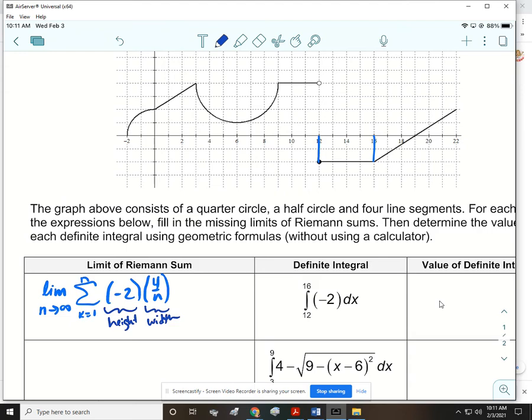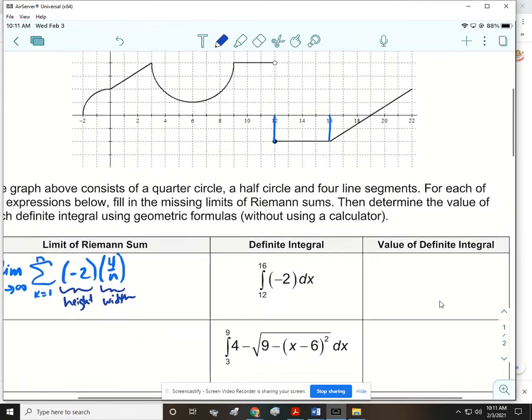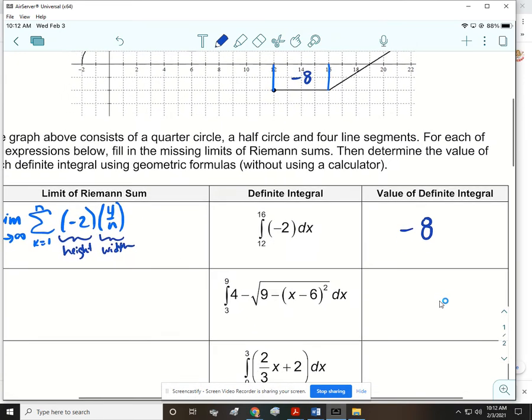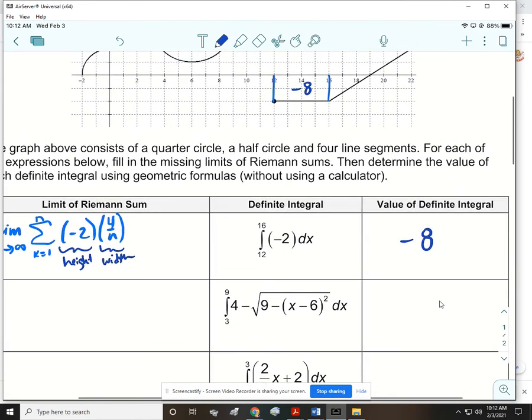All right. And then the value of that, we could just find that area of that rectangle. So it's going to be 2 times 4, which is 8. Now, because it's underneath the x-axis, so it's going to be negative 8.